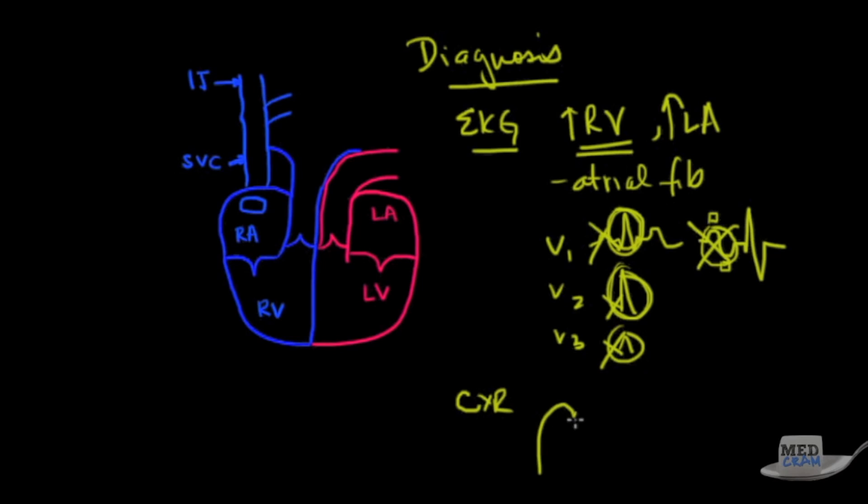On chest X-ray, you'll notice sometimes a double bubble - you'll have the heart border and behind it right about here another double density. That double density is the left atrium. I encourage you to look online at X-rays of people with mitral stenosis. The other thing you might see is cephalization, so the pulmonary vasculature is going to be engorged, or you might see flat out pulmonary edema.